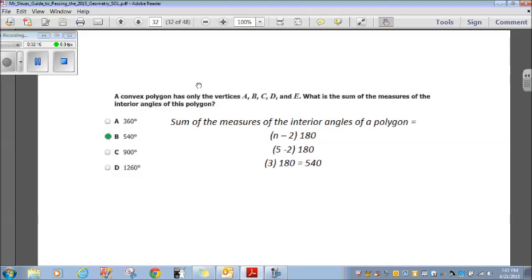A convex polygon has only the vertices A, B, C, D, and E. What is the sum of the measures of the interior angles of this polygon? Well, we remember the sum of the measures of the interior angles of a polygon, the formula, is N minus 2 times 180. It says it has vertices A, B, C, D, and E. So, that's 5 vertices. So, that's going to be 5 sides. So, plug in 5 for the N. 5 minus 2 times 180. 5 minus 2 is 3. 3 times 180 is 540. Sum of the measure of the interior angles, 540 degrees. Okay. Let's move on.